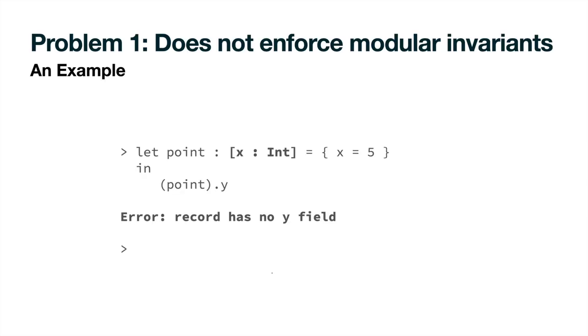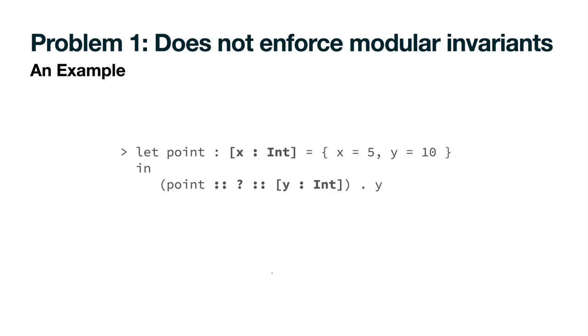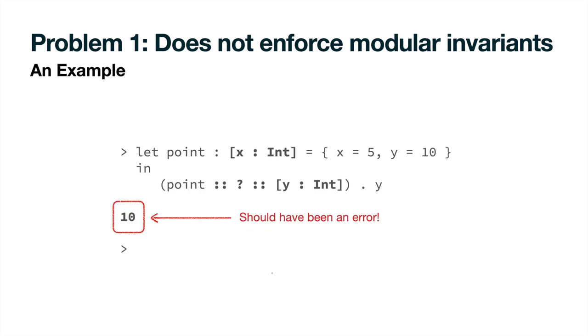We identify two unintended consequences of the original design for gradual records of typing using AGT. The first problem is limited enforcement of modular invariants. By ascribing point to have a record type with only one field x of type int, we intend to hide any other fields, like y, even when the field exists in the ascribed value. We would expect any chain of casts, including one that obscures information by casting first to the unknown type, to produce an error and not allow the projection to proceed. Unfortunately, this is not the case for the original design, which instead exposes the field that was supposed to be hidden.